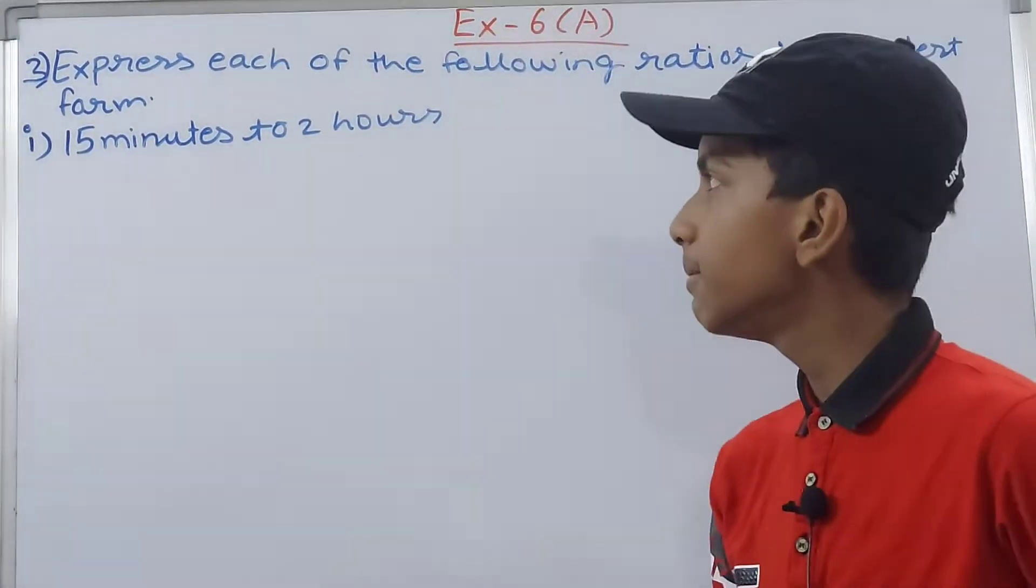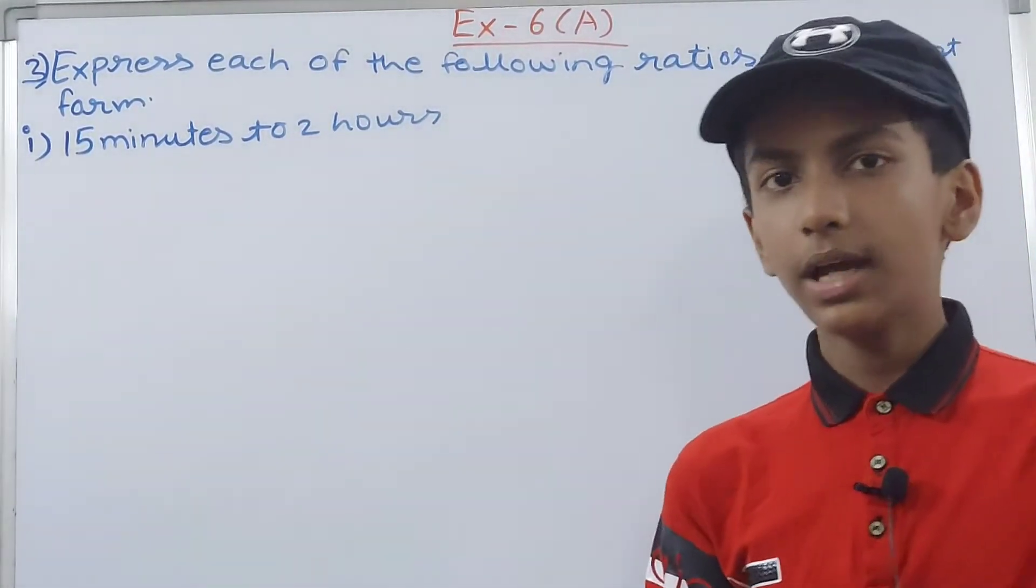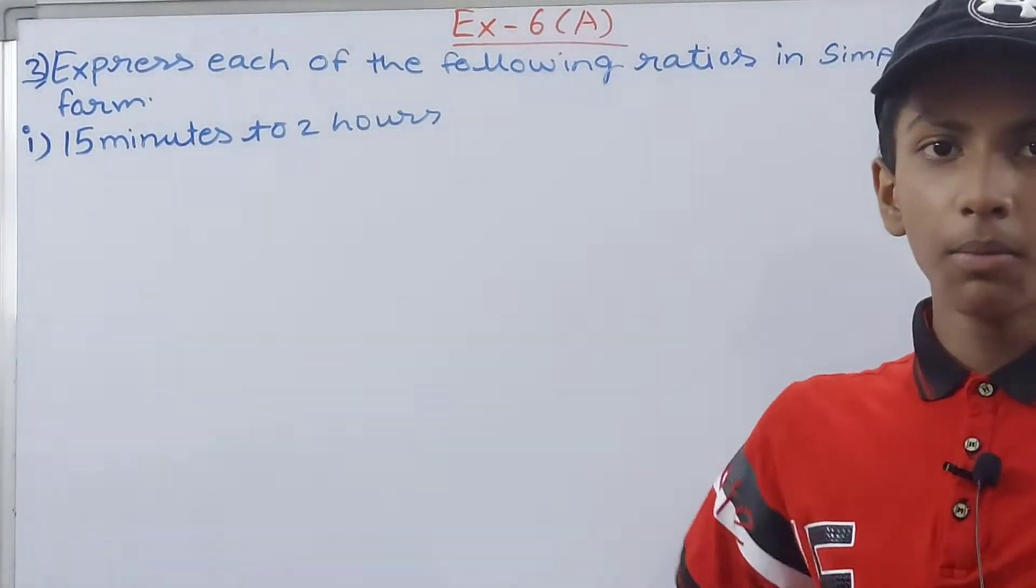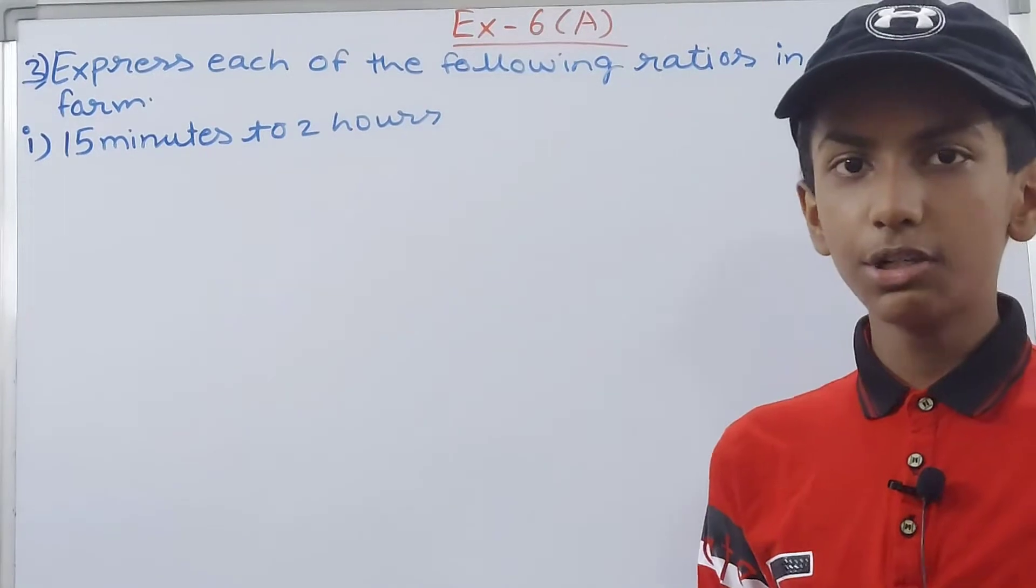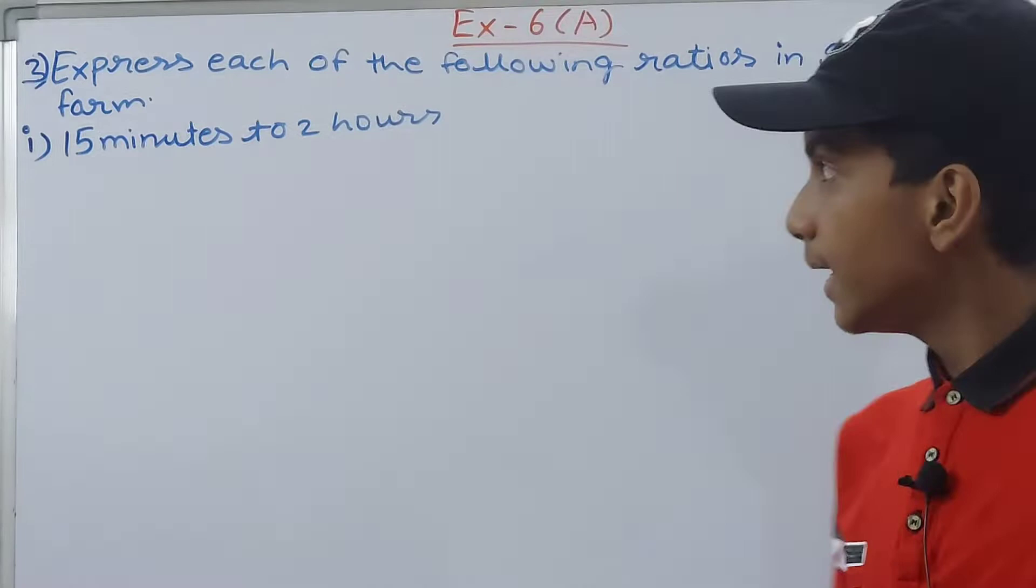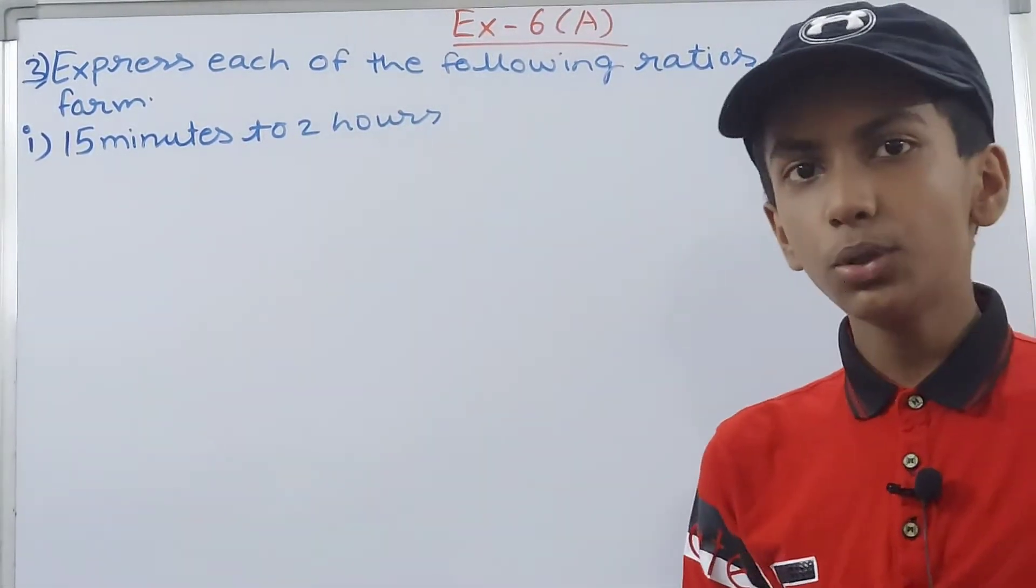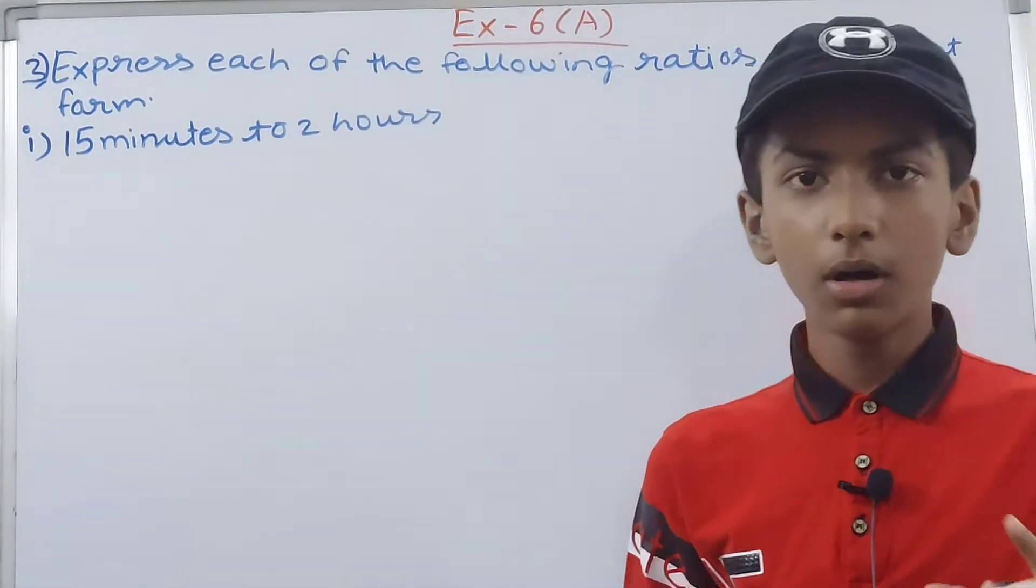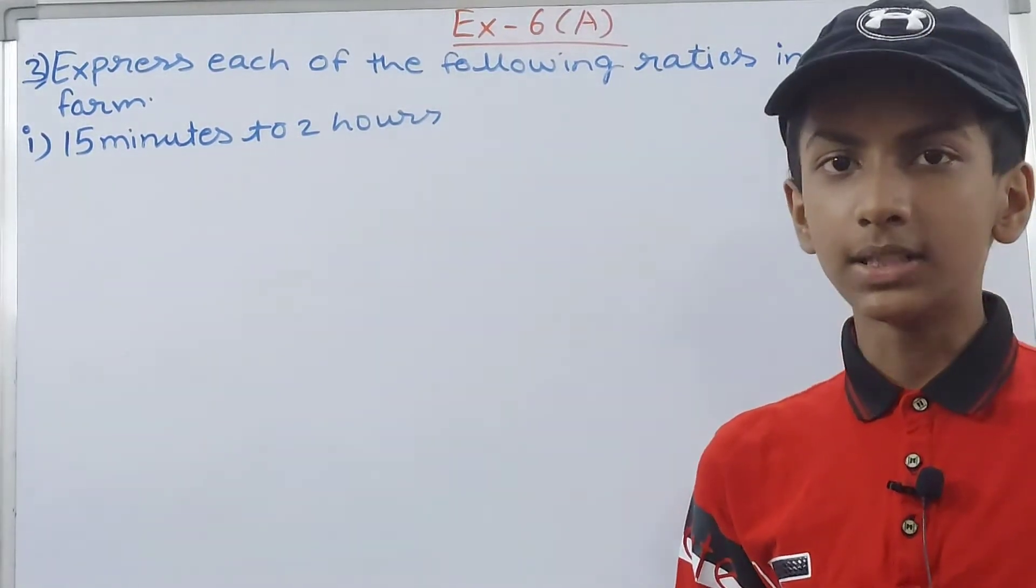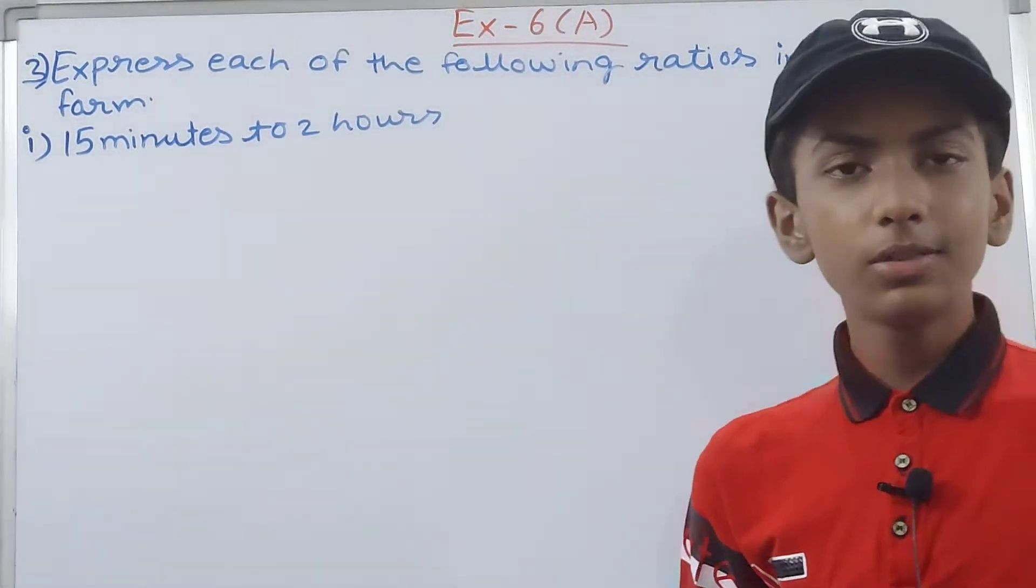First we've got 15 minutes to 2 hours. You cannot directly compare them because one is minutes and the other is hours. Ratio is a comparison of two quantities of same kind. Although they both represent time, we need both of them to be in one unit - both should be minutes or both should be hours. It will be easy to convert the hours into minutes.